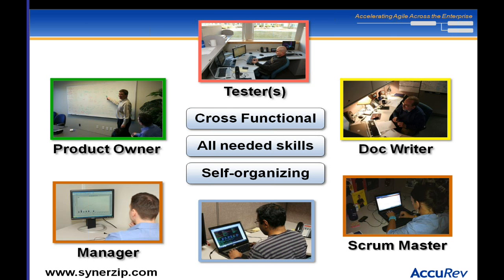A cross-functional team means you have all the skills: a tester, a doc writer, a scrum master, a manager, a developer, a product owner — all the functions you need to get work done on a particular project, also self-organizing. This team is going to be estimating user stories in story points and doing the actual work. Ideally in an agile team these folks are not shared across projects, so their entire fully-loaded salary and overhead goes into calculating the cost, making it a lot easier.